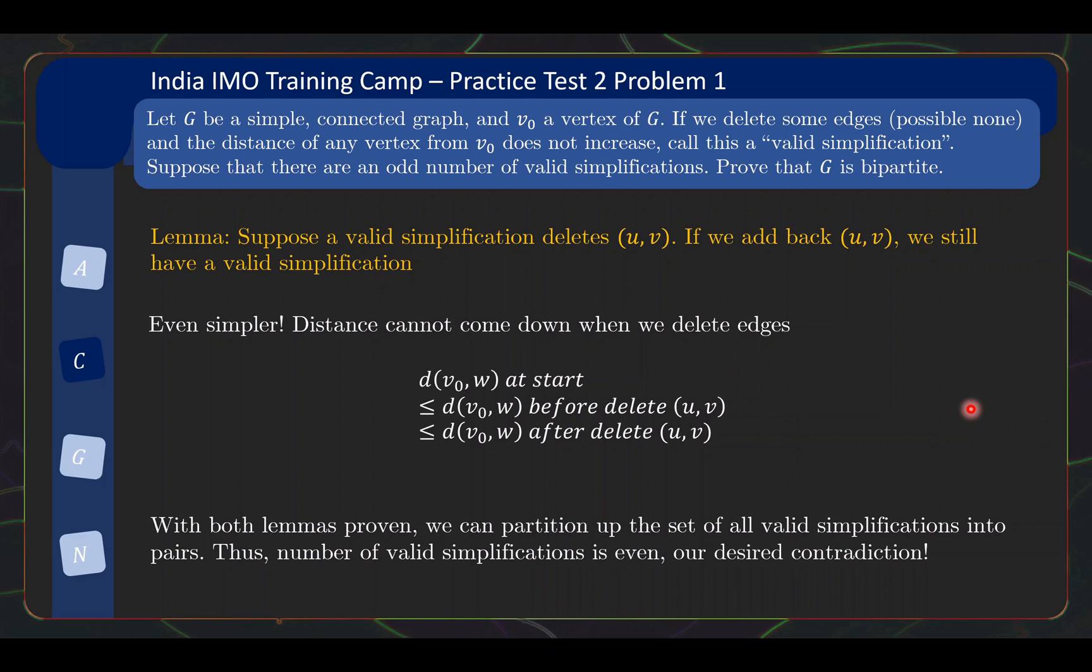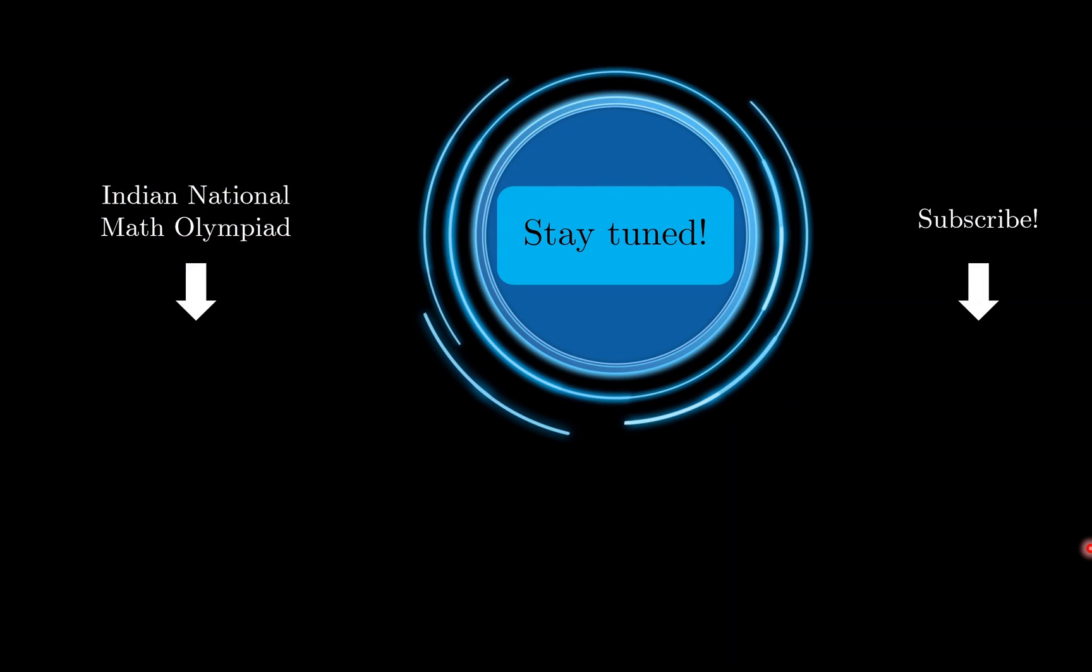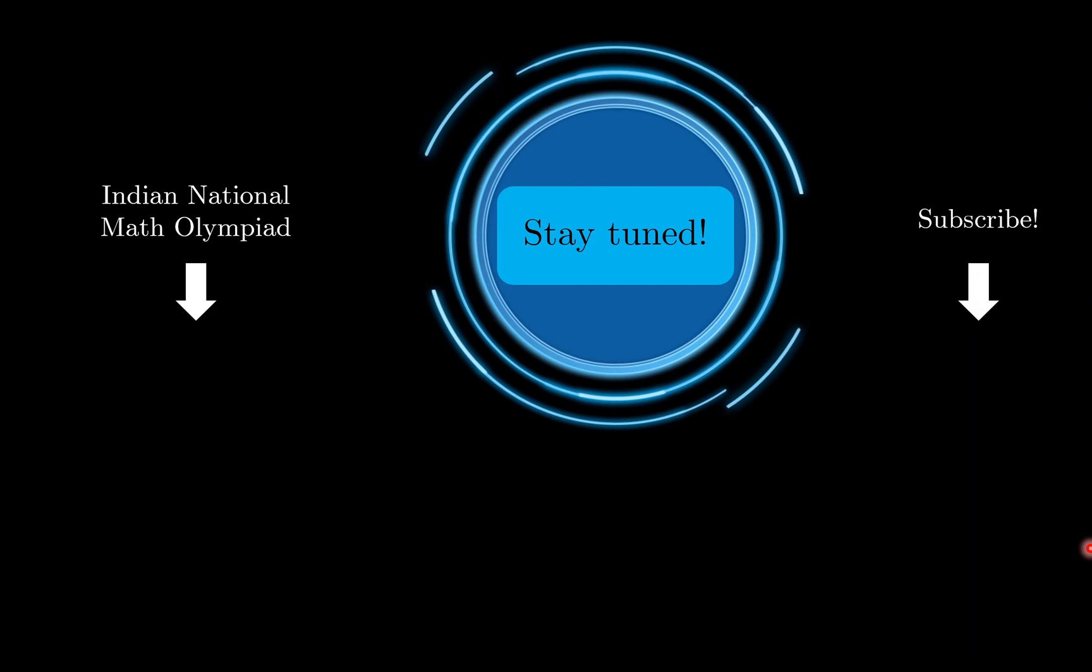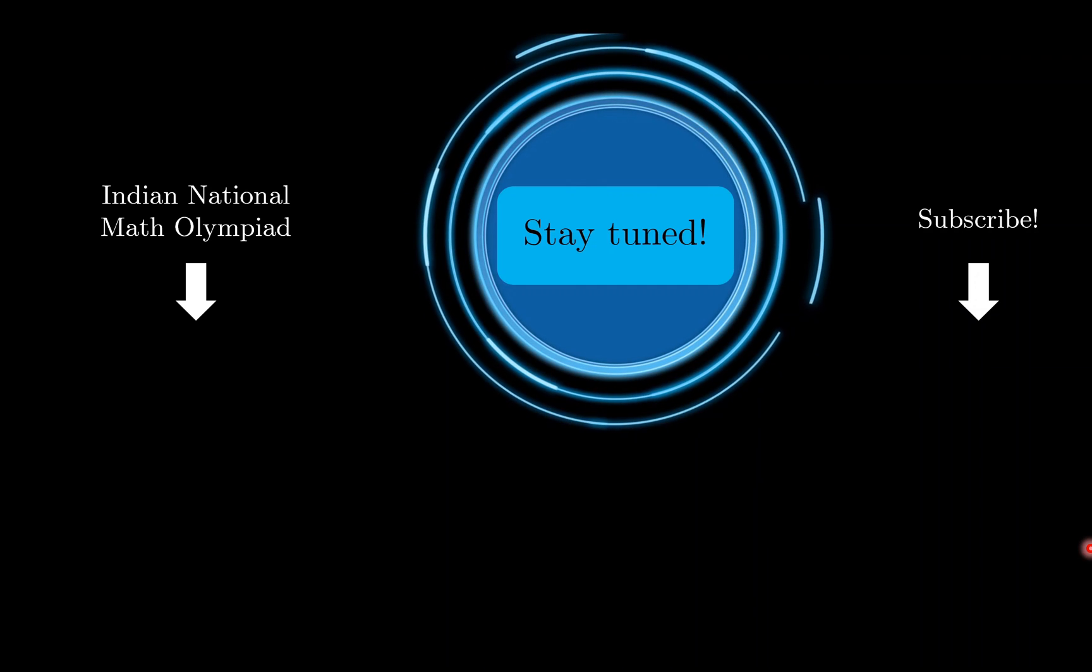So, now that we have proven both sides of the pairing, we can basically pair up all the valid simplifications. And so, the number of valid simplifications is even, which is our desired contradiction. That's all for the proof of this problem. I hope you found the problem instructive to brush up on your knowledge of graph theory. So, stay tuned to the channel for more math videos as we prepare for the upcoming IMO.